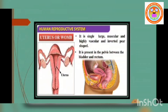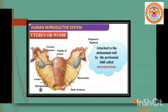The uterus is a hollow, thick-walled, muscular, highly vascular and inverted pear-shaped structure lying in the pelvic cavity between the urinary bladder and rectum. The major portion of the uterus is the body and the rounded region superior to it is the fundus. The uterus opens into the vagina through a narrow cervix. The cavity of the cervix, called the cervical canal, communicates with the vagina through the external orifice and with the uterus through the internal orifice. The cervical canal along with the vagina forms the birth canal.